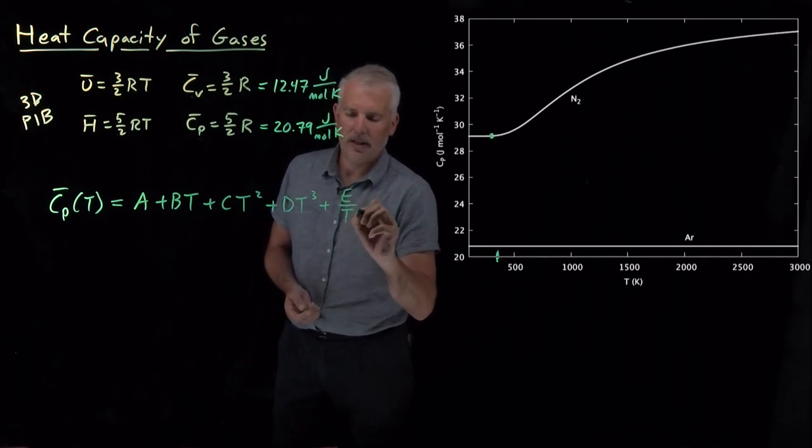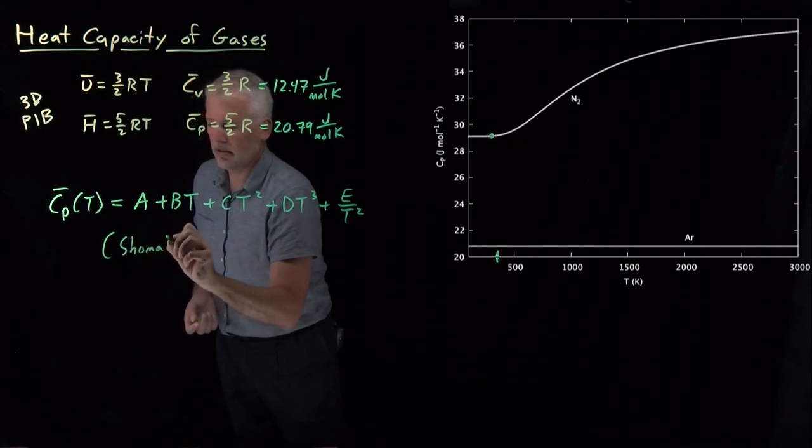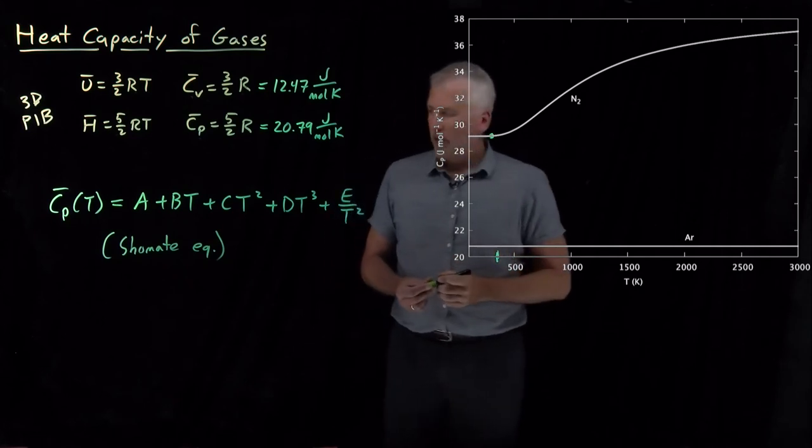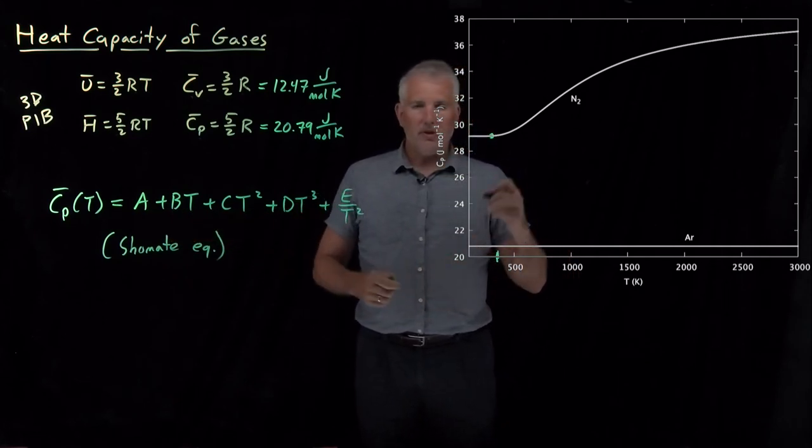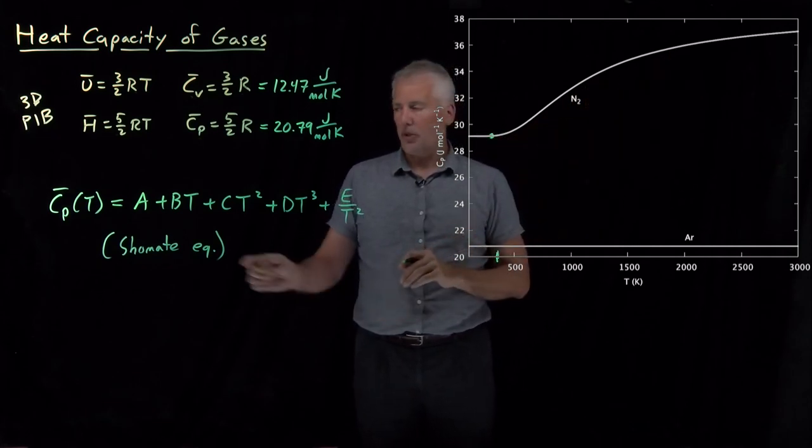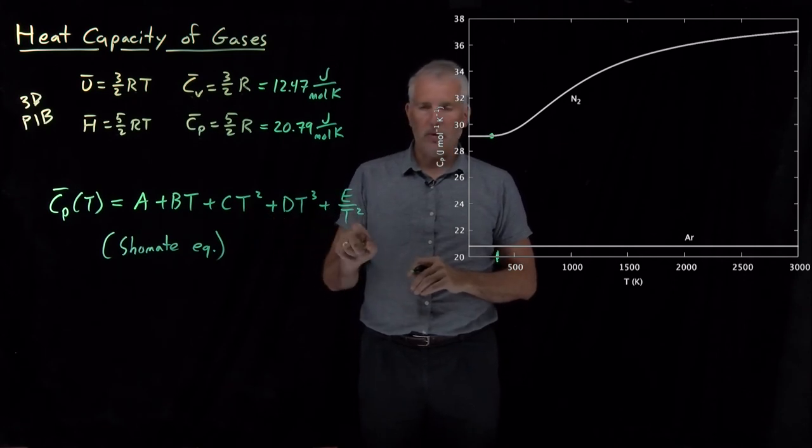In fact, this equation has a name. If we use the Shomate equation to come up with an equation, essentially this is a polynomial that describes how the heat capacity is depending on the temperature. So with this linear term, quadratic term, cubic term, and a 1 over T squared term.